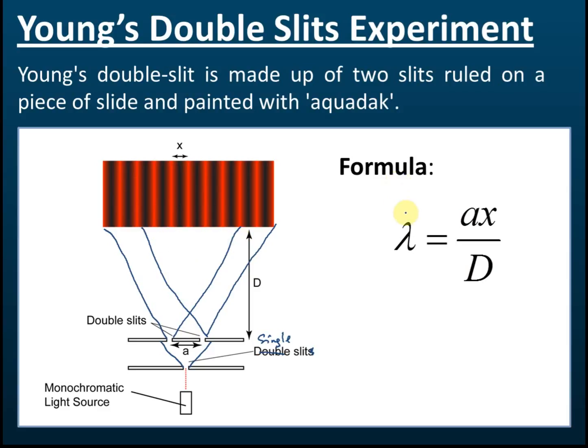And since it's interference, we can use the formula lambda equals ax over d to find the wavelength. So this is also the method we use to find the wavelength of light.